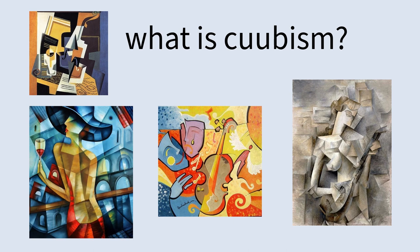I wanted to go into what cubism actually is, because I did not know this at all. It is described as an art movement that originated in the early 20th century. It is characterized by the representation of subjects from multiple viewpoints, usually fragmented and abstracted, which results in a very geometric look — a lot of different shapes that create a picture. In cubism, geometric shapes and abstract art are used to tell a story from multiple viewpoints; you're not just looking at one thing, you're looking at everything as a whole.